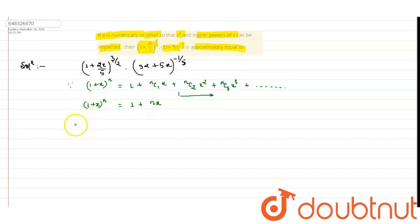The problem can be simplified. Multiply 1 plus, the power 3 by 2 can be multiplied with x. That is 3 by 2 into 2 by 5x, into 1 plus... if we take common 32 from the bracket to make 1 in the bracket, then it will become 32 to the power minus 1 upon 5.